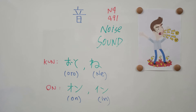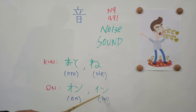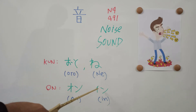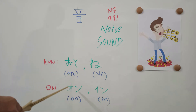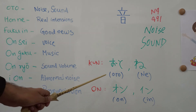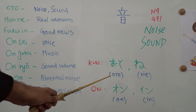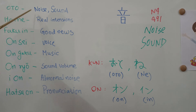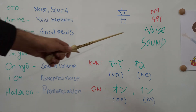Next, we will cover some common words associated with this kanji. We will be covering all the pronunciations of the kun and on readings so that you can understand the usage. The first common word is 'Oto' — as the kun reading, it simply means noise or sound.